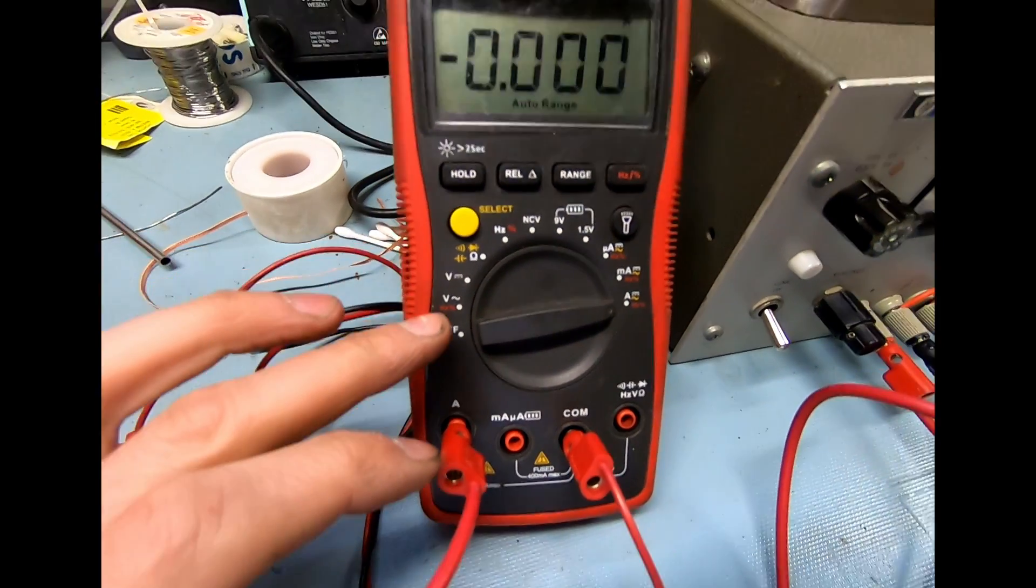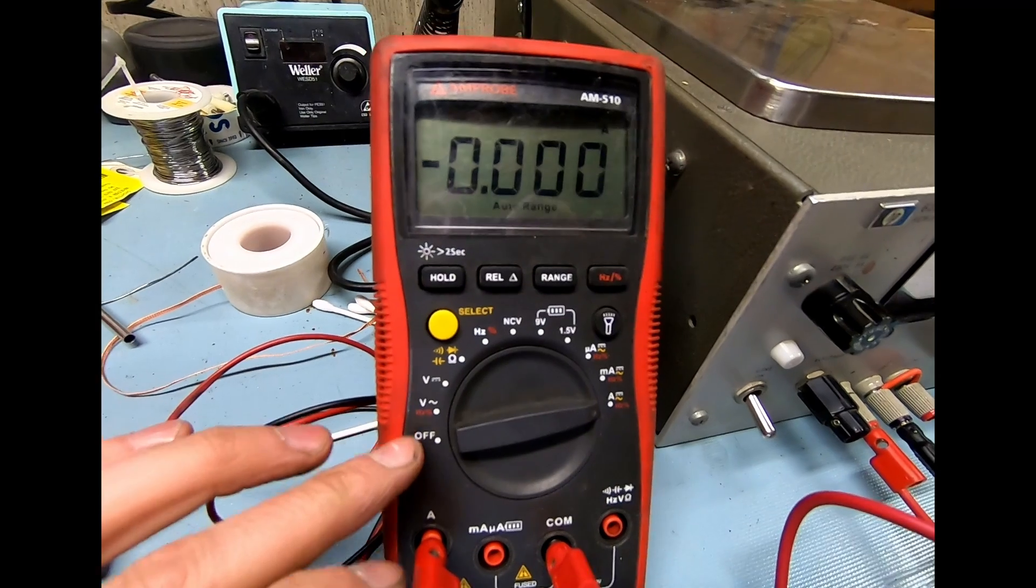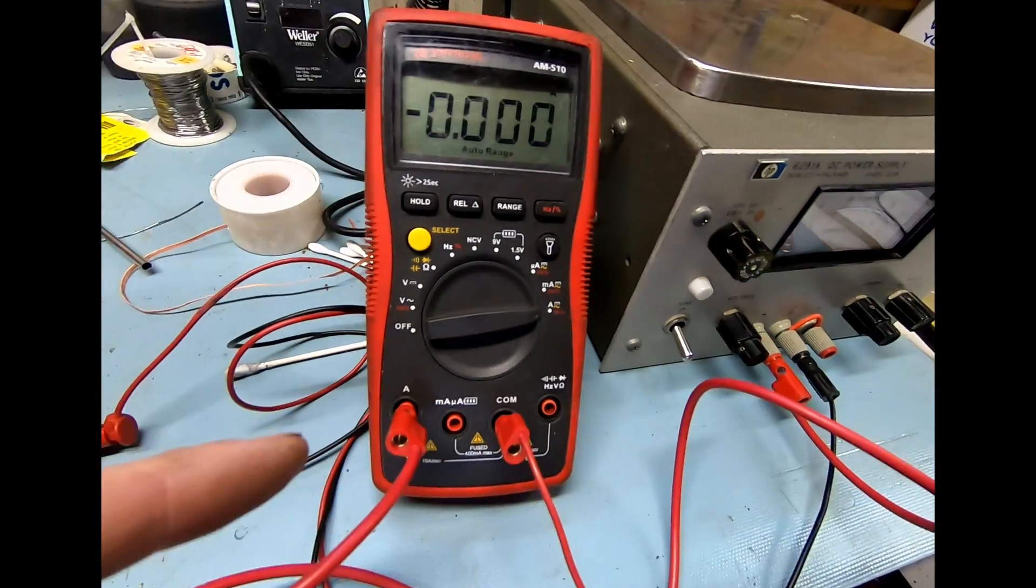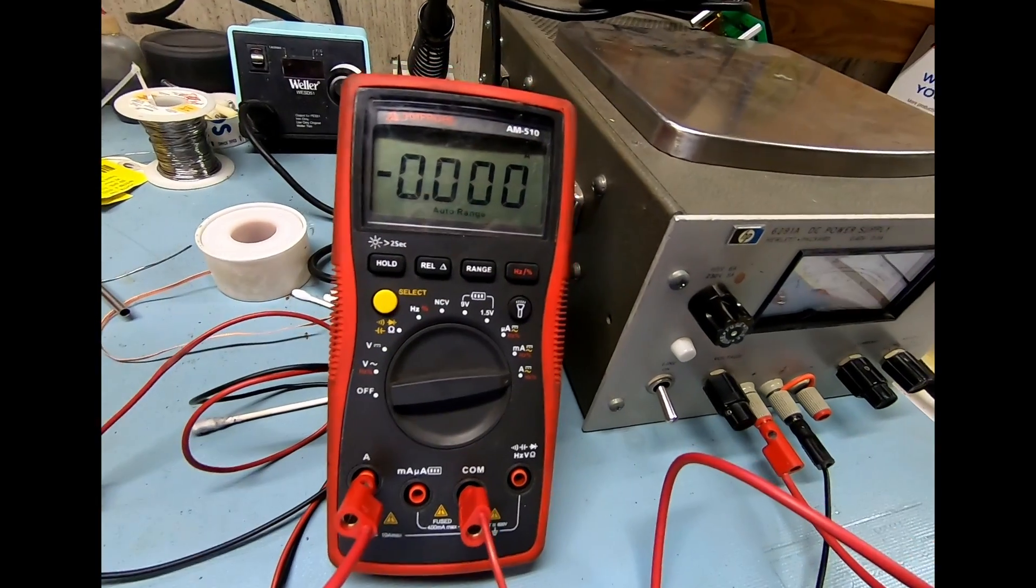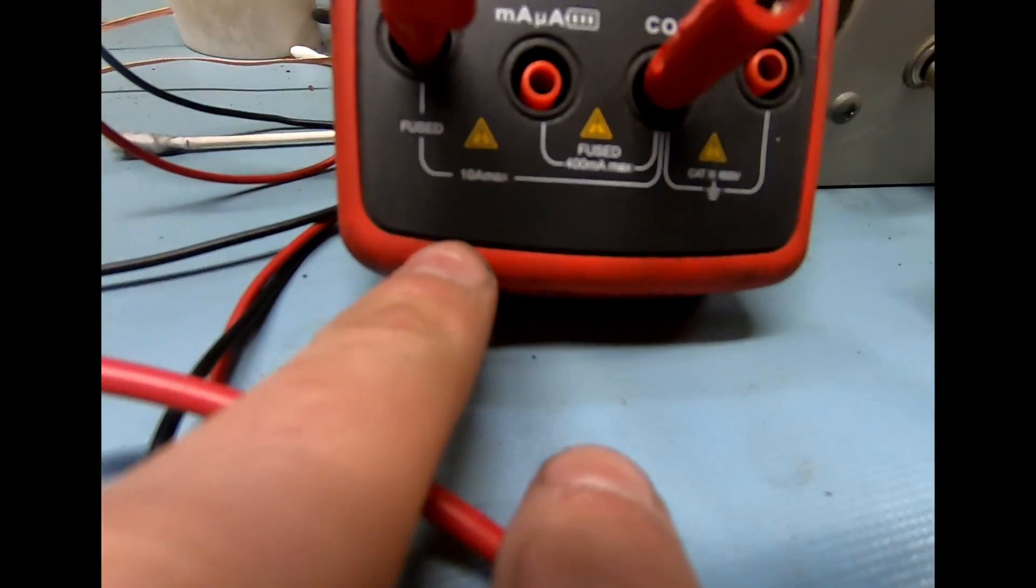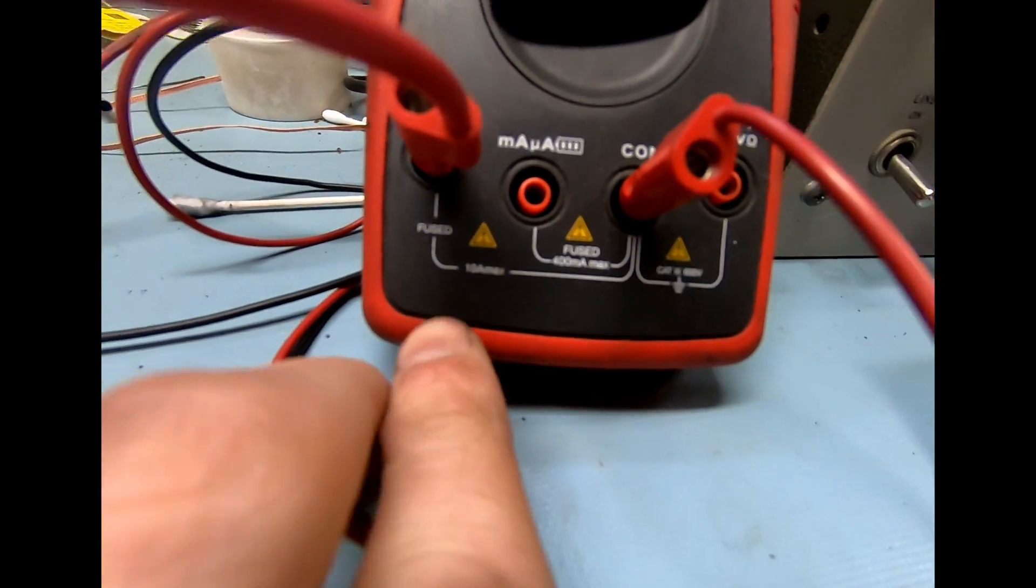When you measure voltage or resistance, you measure across the circuit, meaning you would use these two here, and you basically take a measurement on top of it. With this one, you are actually running the current through the meter, which is why it's very important that you keep it under 10 amps max.